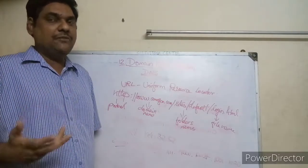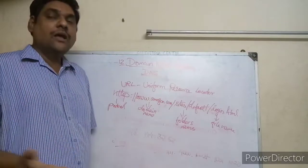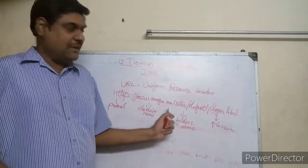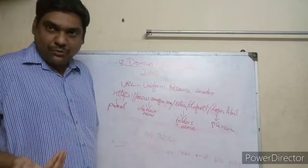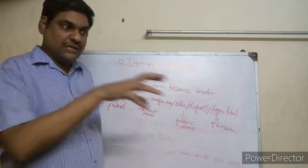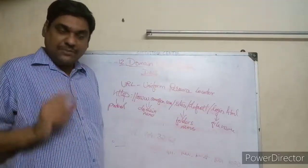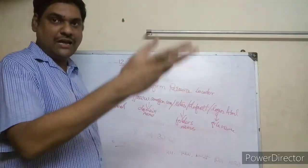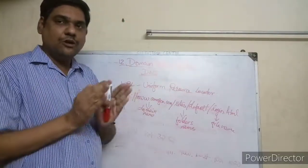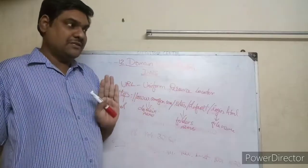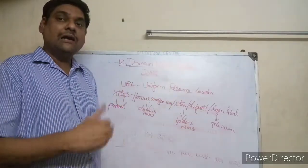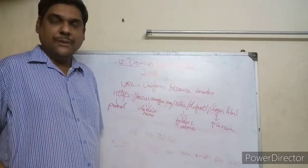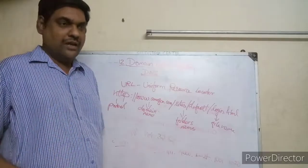A relative URL is used when you are already connected to a server. When a program on the server is running, only the folder name and file name need to be mentioned to access the file. Suppose all documents of one website are on one server — the first connection uses the full URL, and then subsequent web page references use only the file name, making it a relative URL.